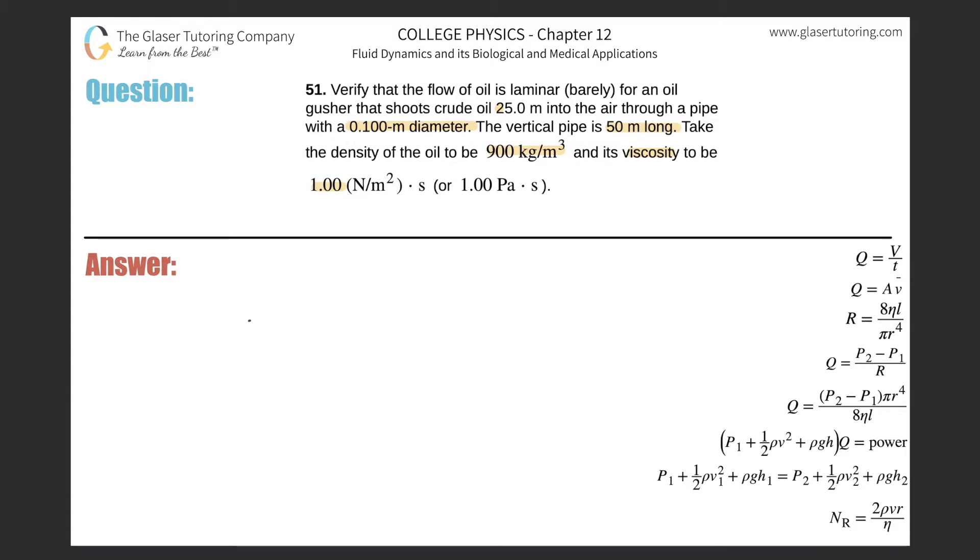It says that the Reynolds number, N_R, is going to be equal to 2 multiplied by the density of the fluid, multiplied by the velocity of that fluid through the tube, multiplied by the radius of that tube, all divided by the viscosity.